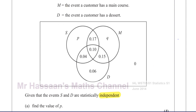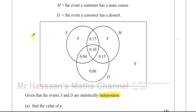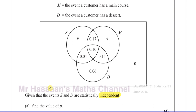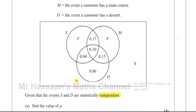Someone asked me yesterday about independent events where the events were intersecting, asking how two events can be independent if there's an intersection between them. That shows a misunderstanding — he has mixed up the words independent and mutually exclusive. They do not mean the same thing. I'm going to go through this to clear up the misconception, because I'm not just a talking mark scheme. I'm here to help people understand.